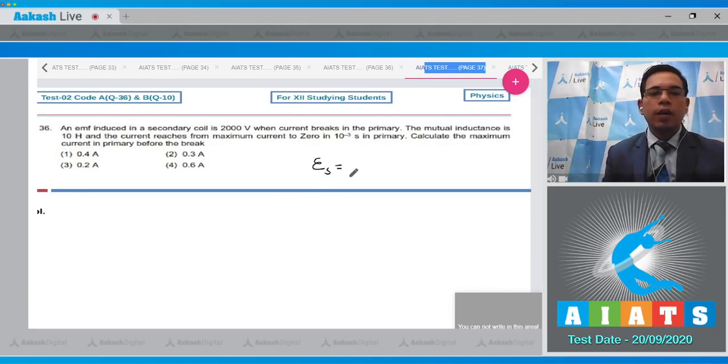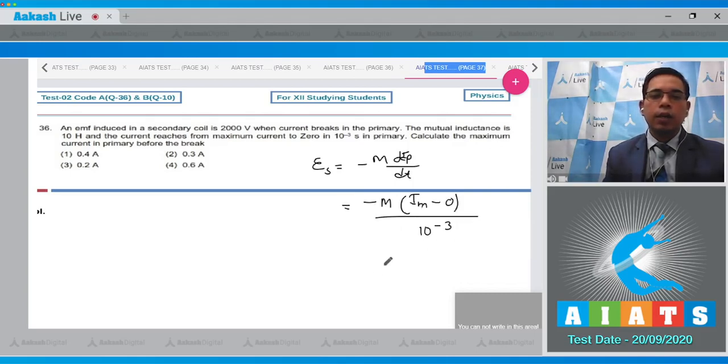We know that the EMF induced in the secondary is equal to minus M dI_p/dt, where I_p is the current in the primary. This will be minus M times dI_p, that means I_maximum to 0, divided by dt. The time interval given is 10^-3 seconds.